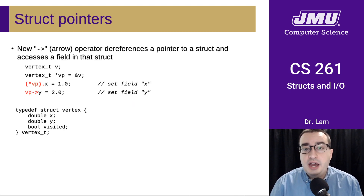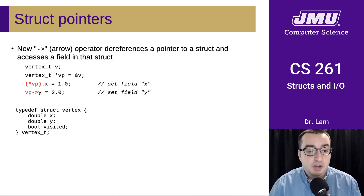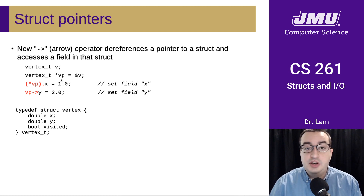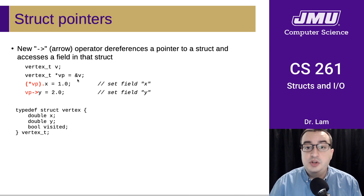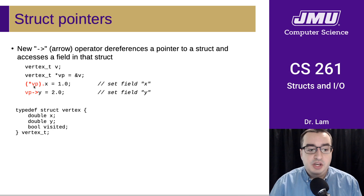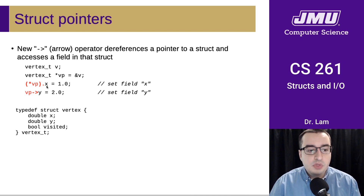Now that we have pointers to structs — here we declare a vertex_t, which is a variable that is a struct, and then we declare a pointer to that struct, initializing it with the address of v. One thing we could do is dereference that pointer and then access a field, like x, for example.